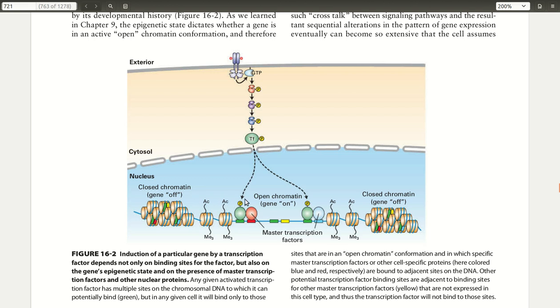Yeah, so this is basically a summary of how different types of proteins can induce the activation of DNA transcription through a series of phosphorylation reactions that ultimately lead to the phosphorylation of a transcription factor.